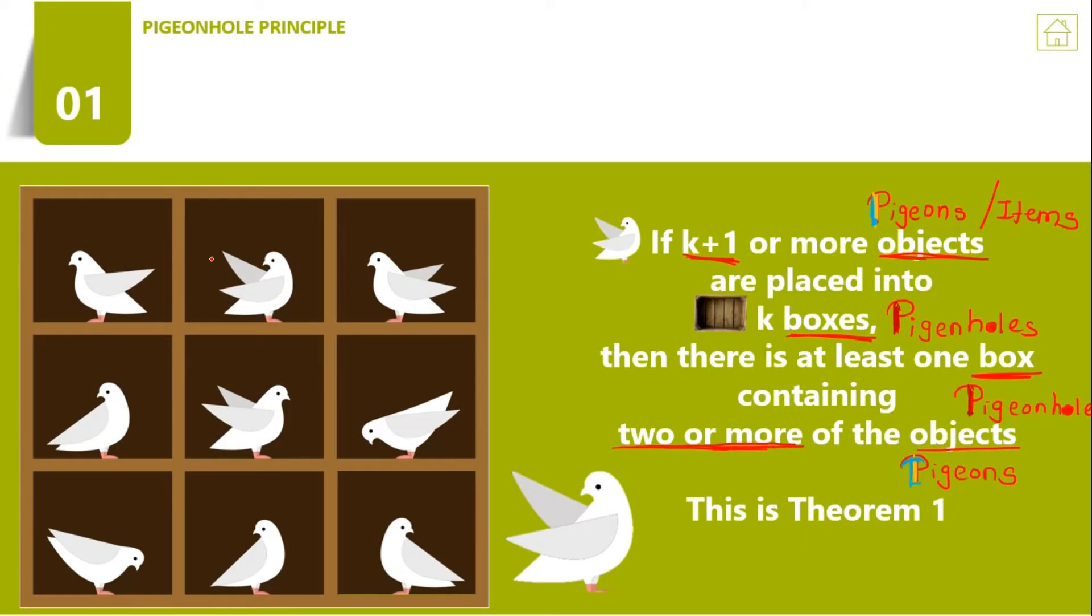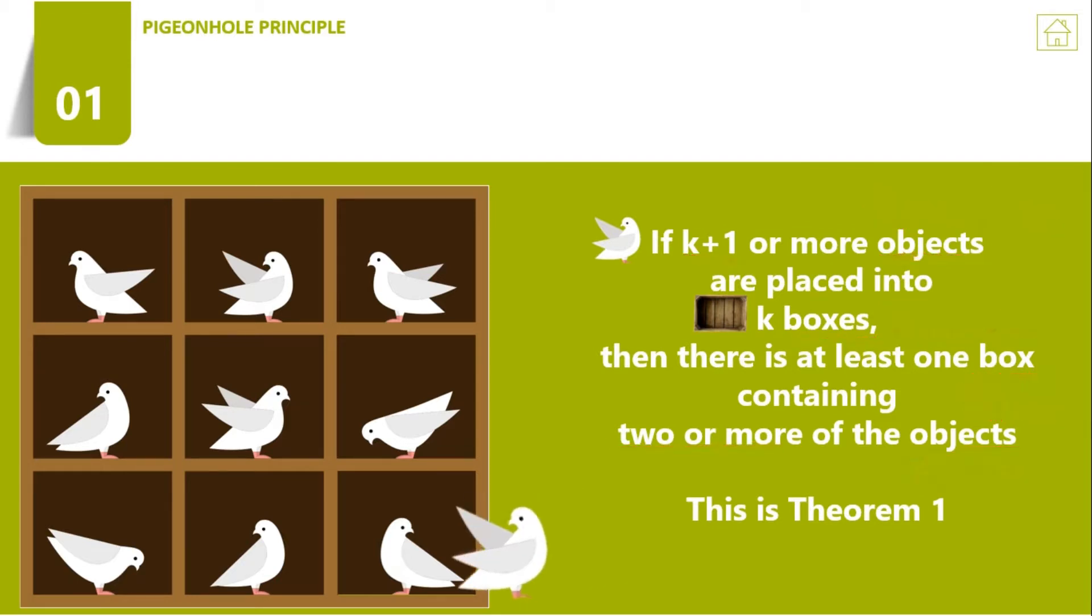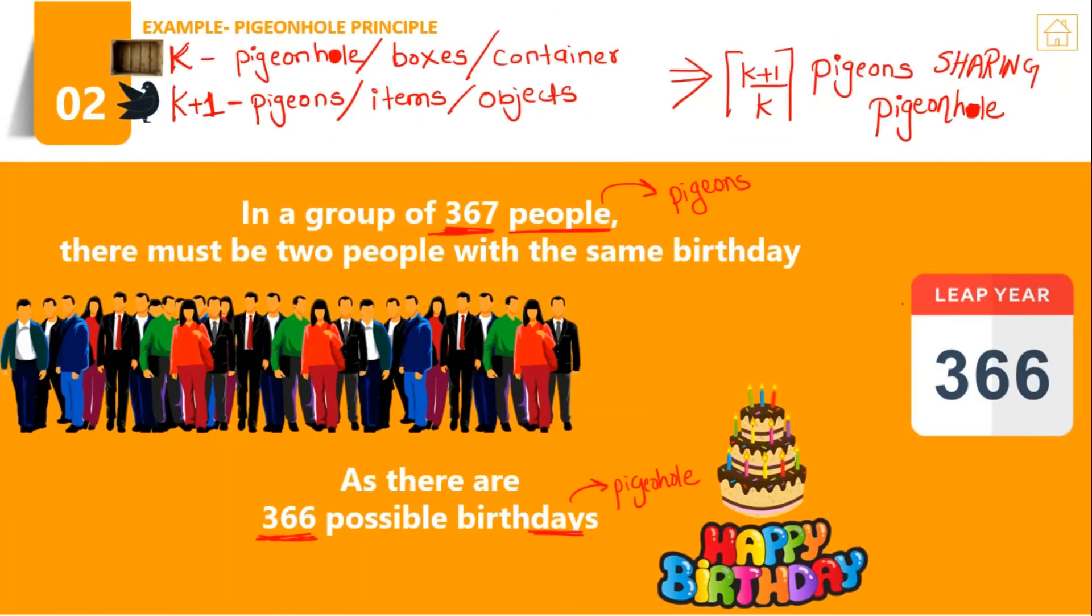More generally, we can say that if there are k pigeonholes and k+1 or more pigeons, then according to pigeonhole principle Theorem 1 we conclude: if k+1 or more objects are placed into k boxes or pigeonholes, then there is at least one pigeonhole or box containing 2 or more of the objects or pigeons. This is Theorem 1, applicable when you are having items just above k+1 value or k value.